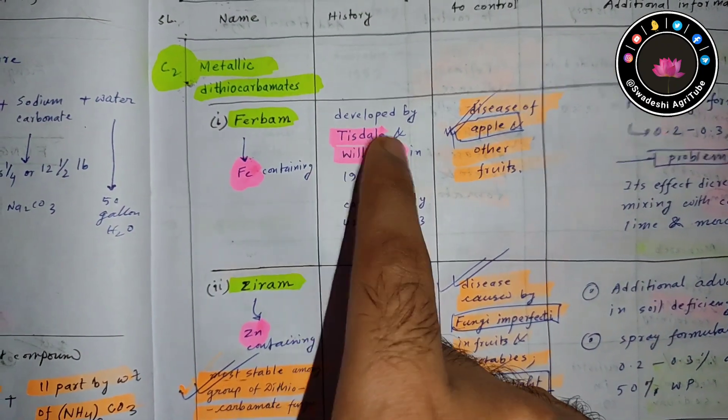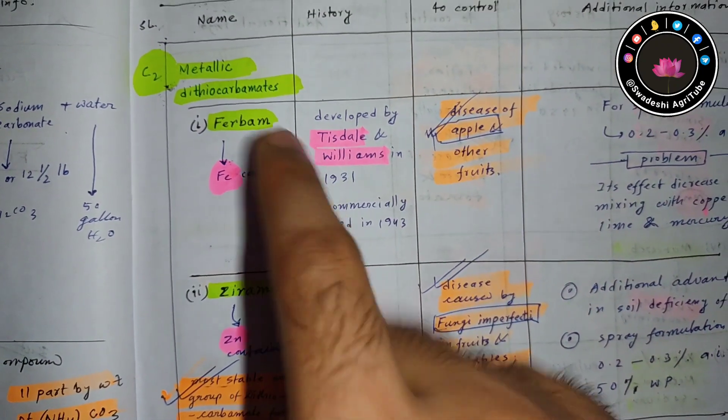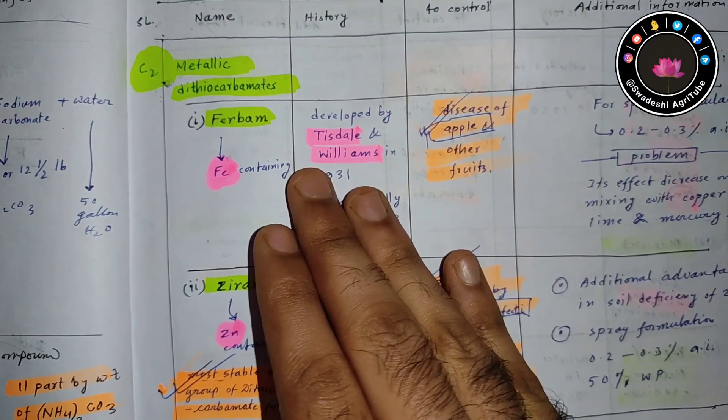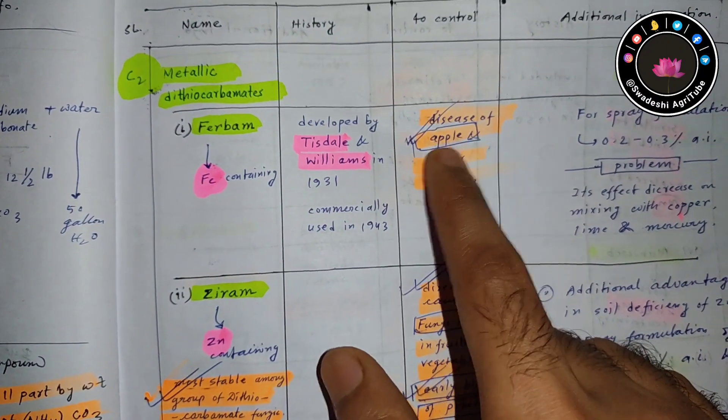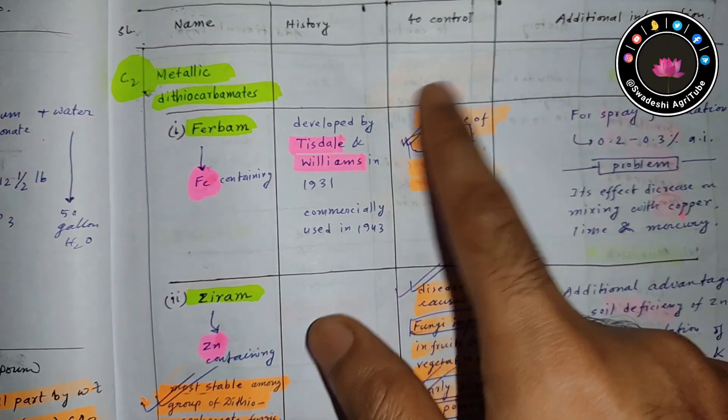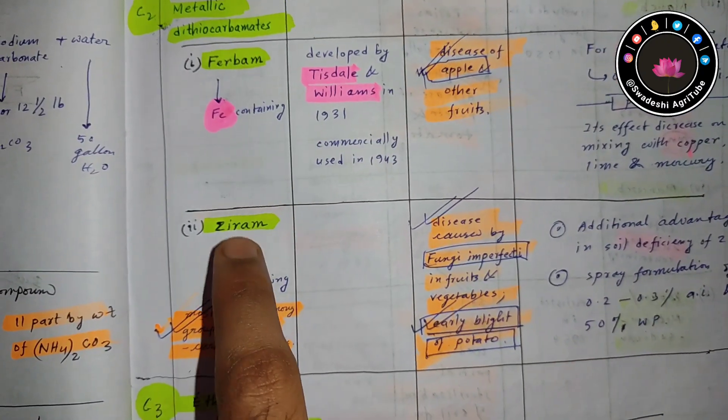Ferbam was developed by Tisdale and Williams. The disease it controls - ferbam actually controls disease of apple and other fruits. You have to remember this.